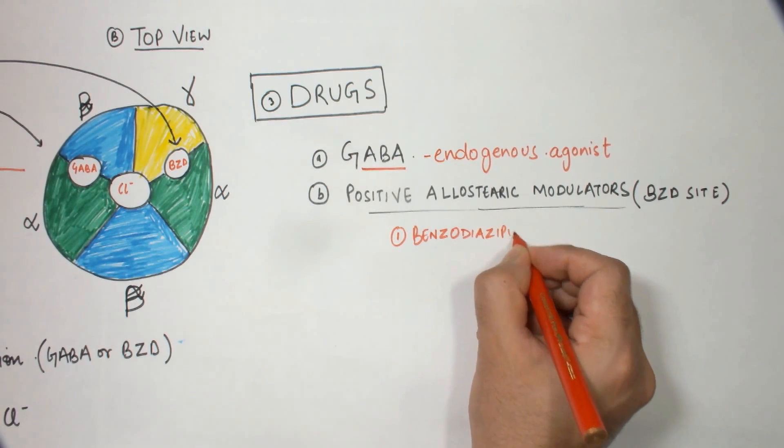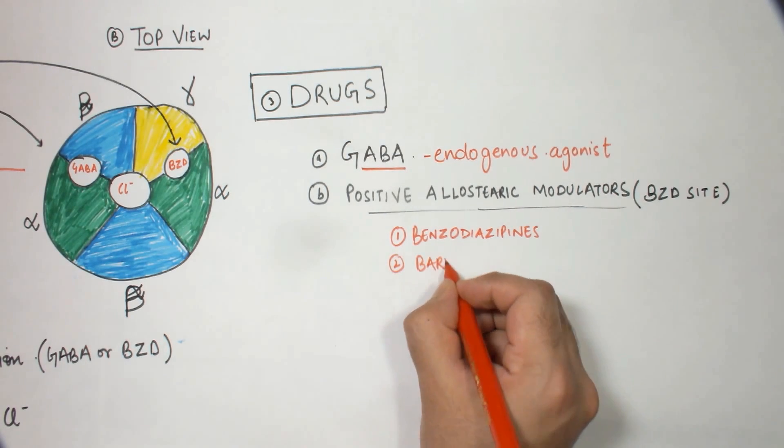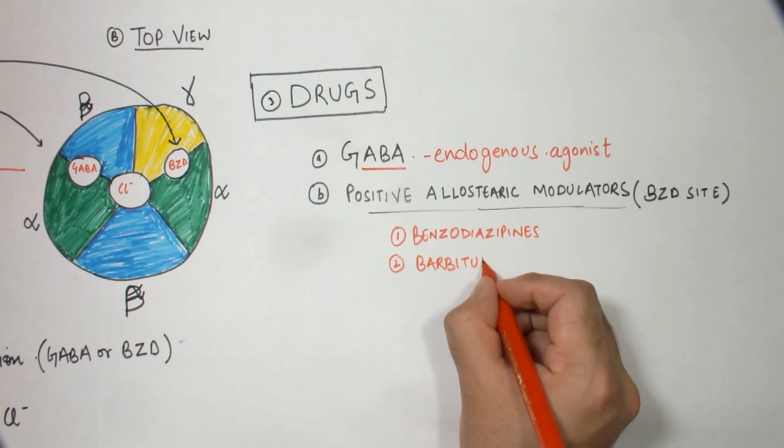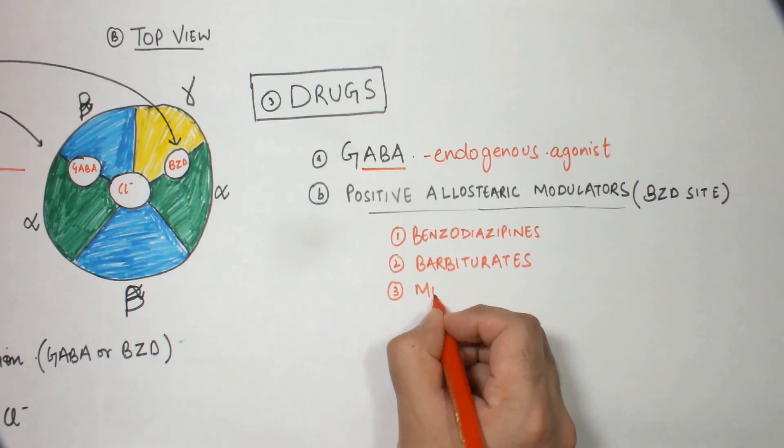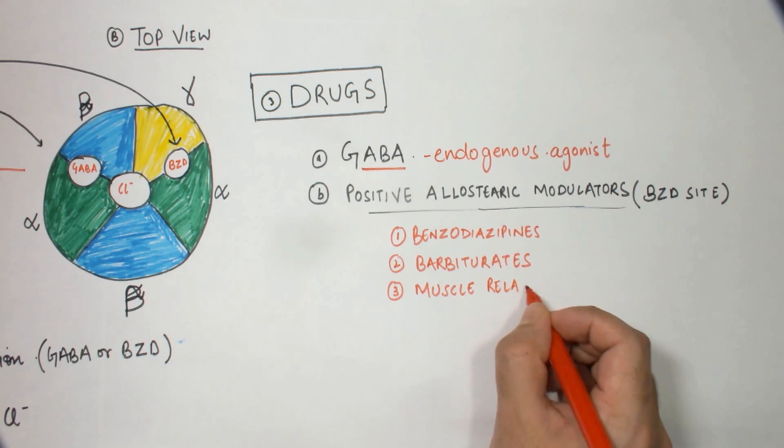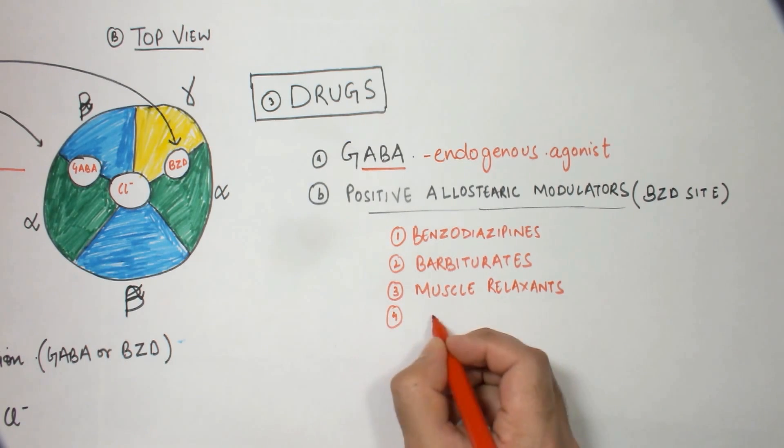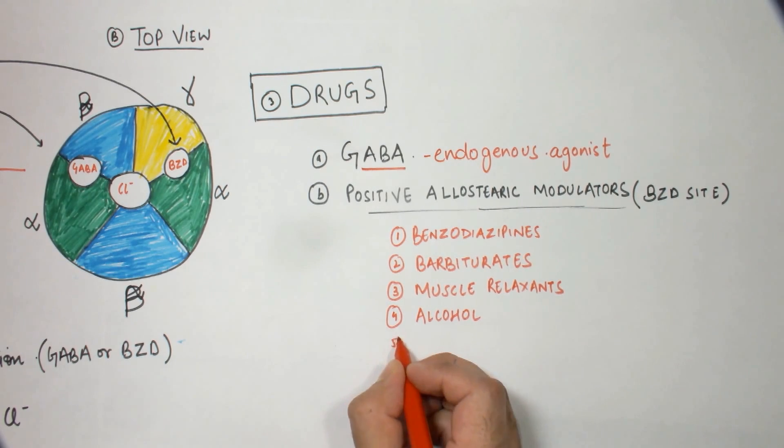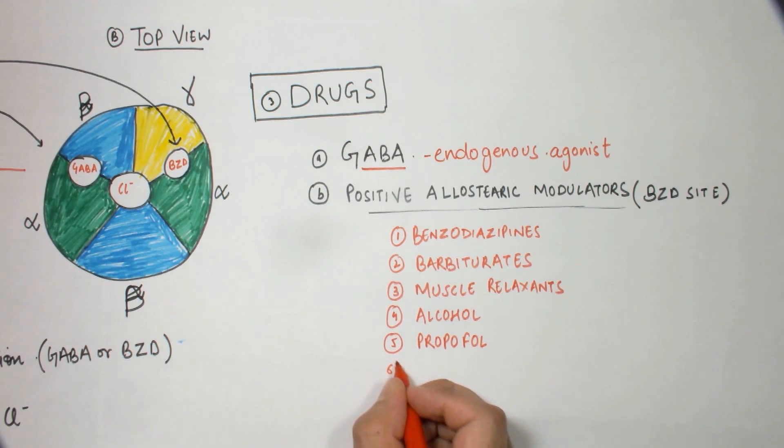The second class of drugs are the barbiturates like thiopental, and the third class of important drugs are the muscle relaxants like thiocolchicoside. Also alcohol acts on this site, and then we have some anesthetic drugs like propofol and etomidate. There are some other drugs but they are not as important as these classes.